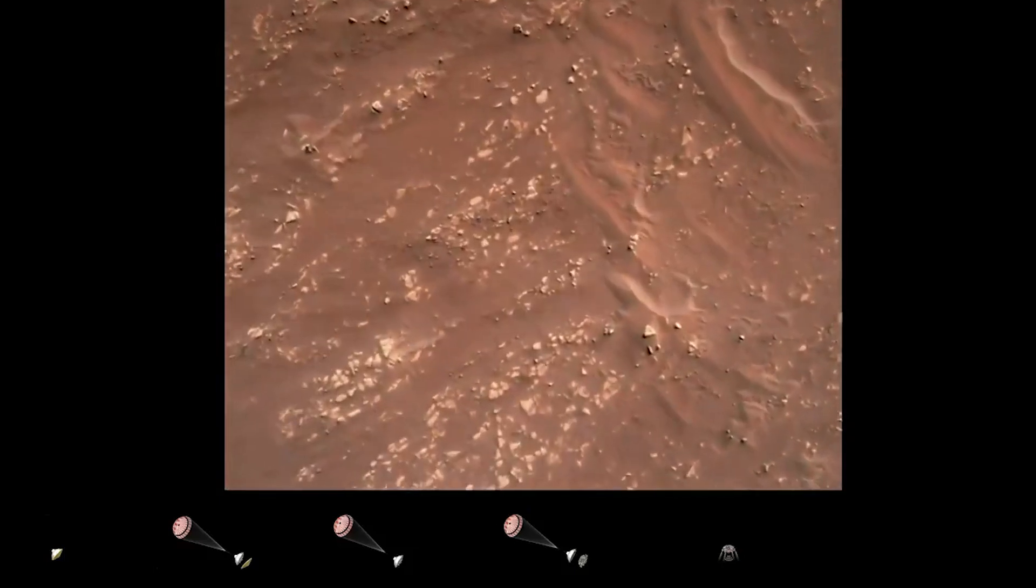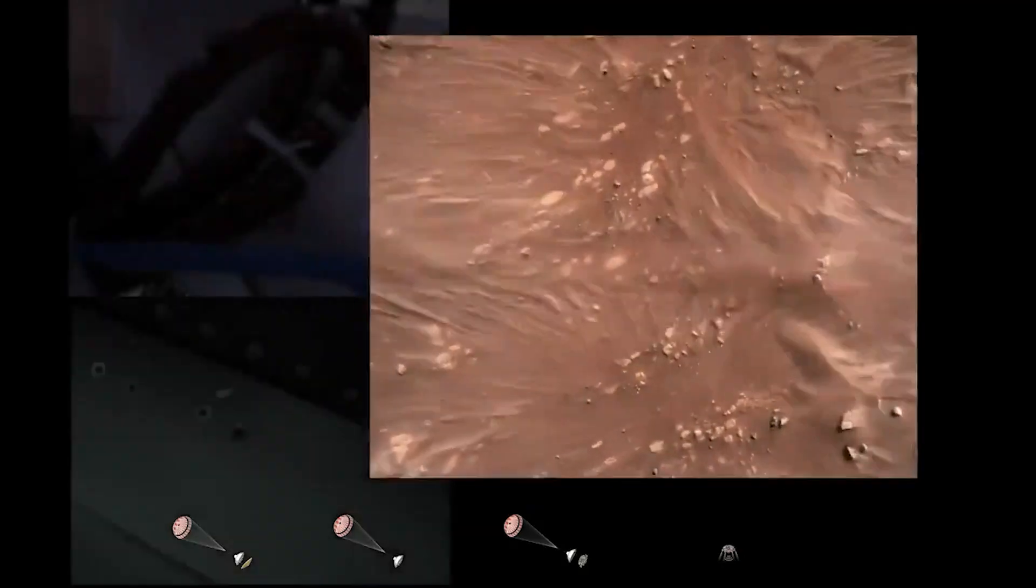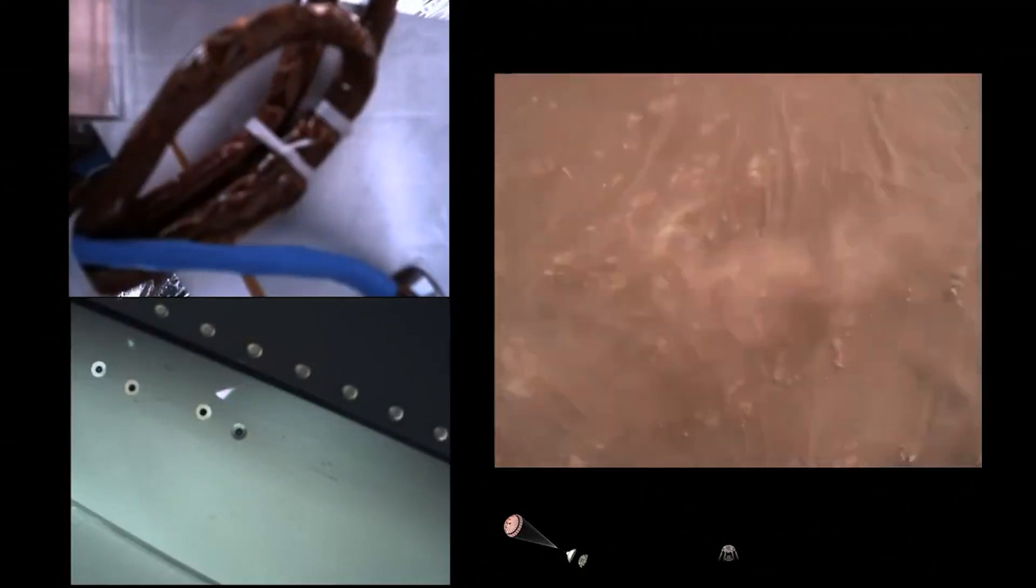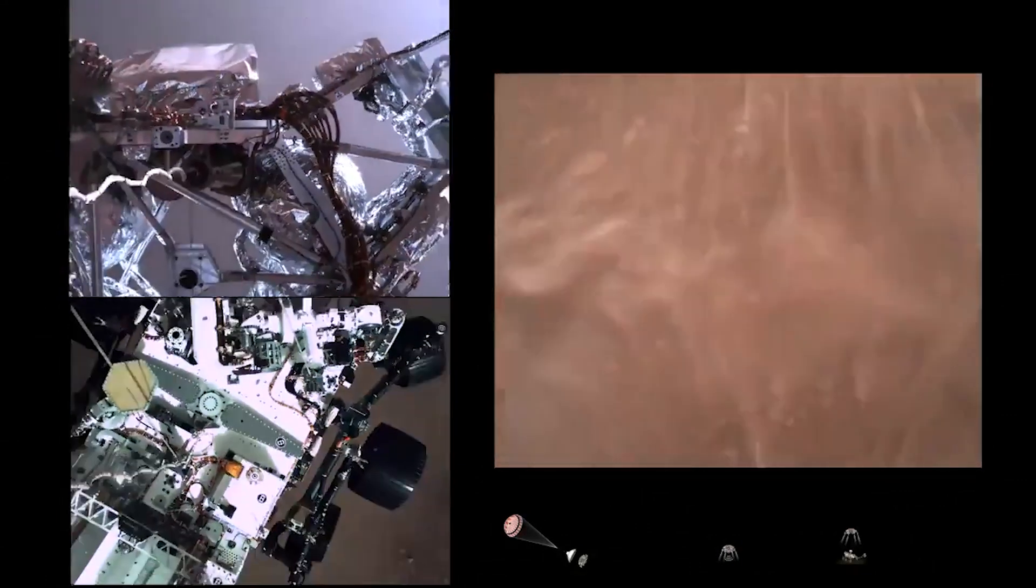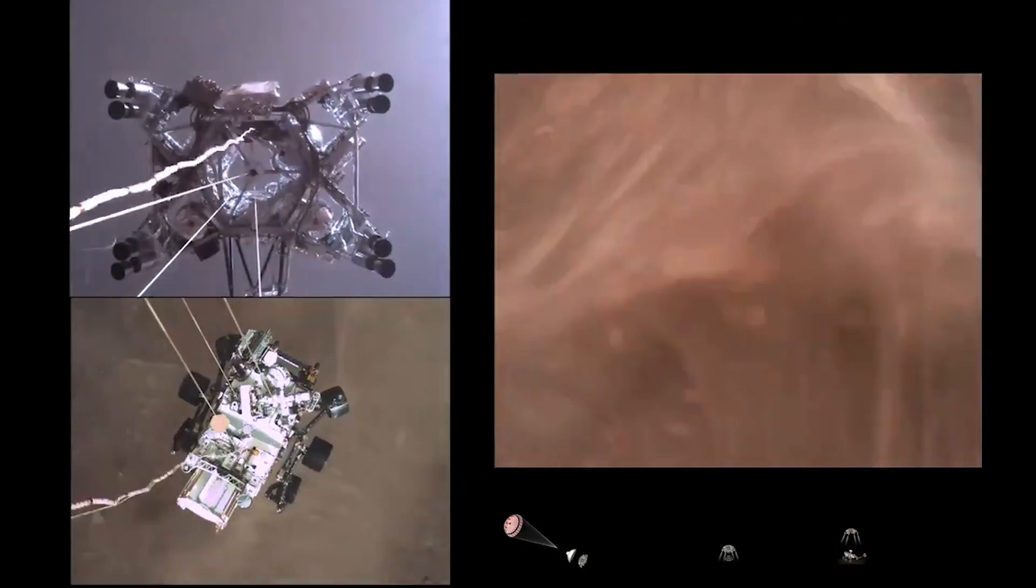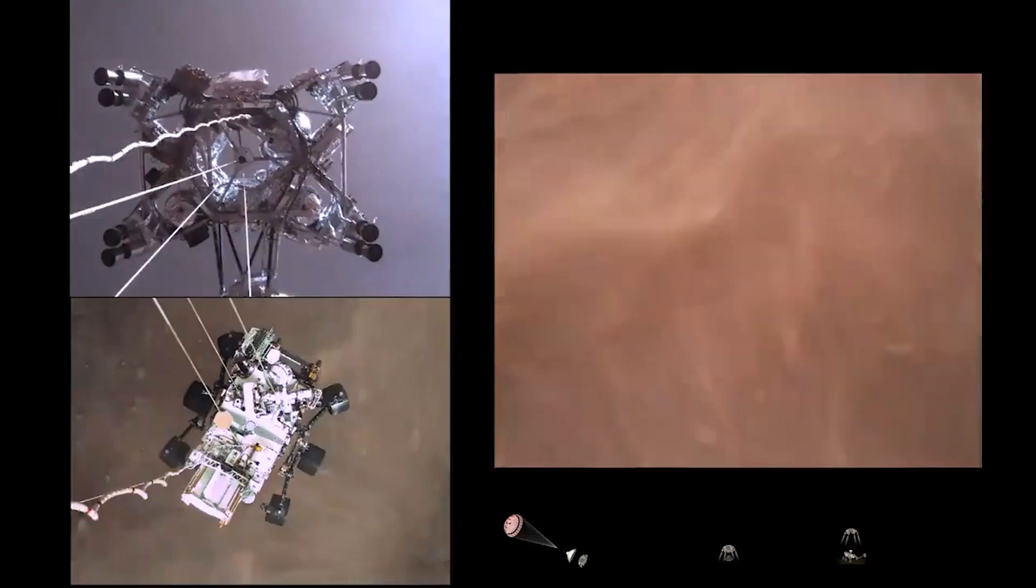We have started our constant velocity accordion, which means we are conducting the sky crane maneuver, about to conduct the sky crane maneuver. Sky crane maneuver has started. About 20 meters off the surface.